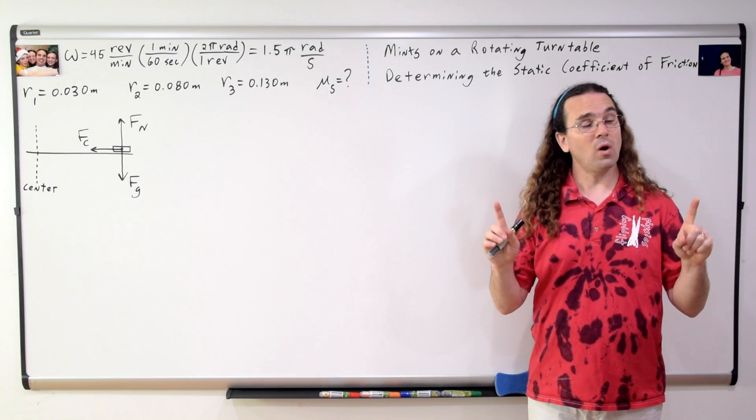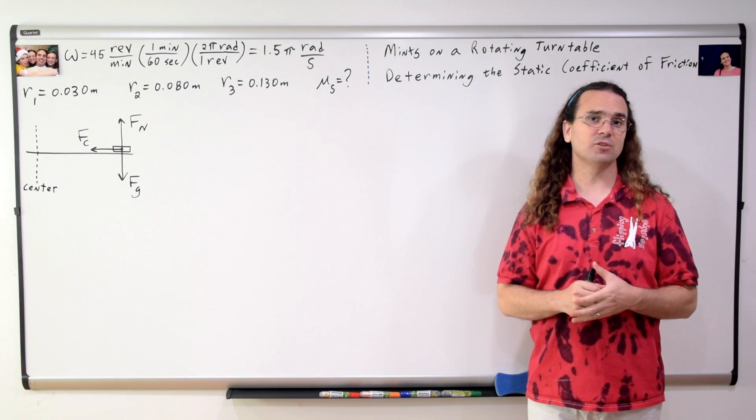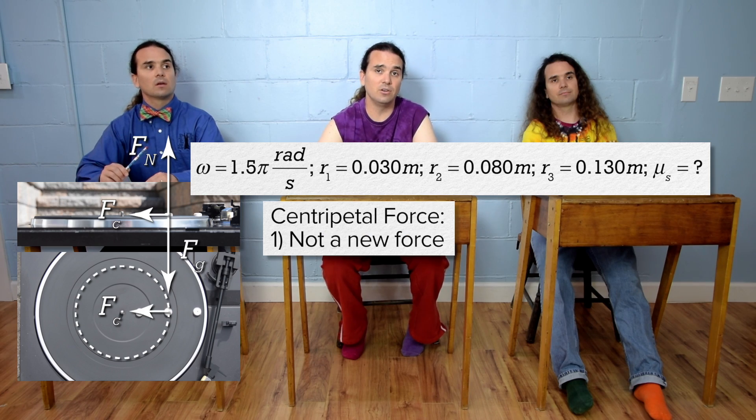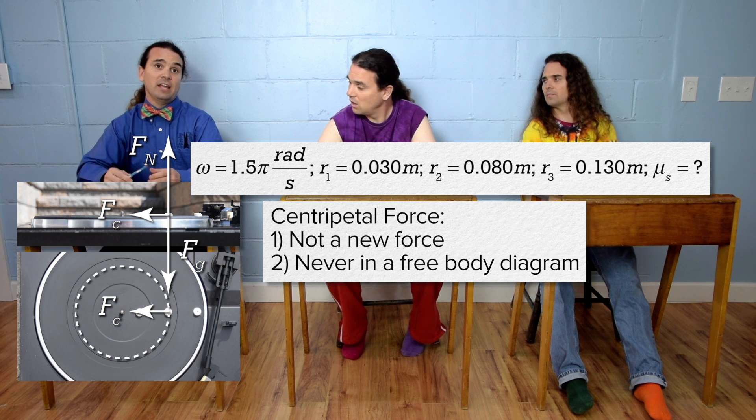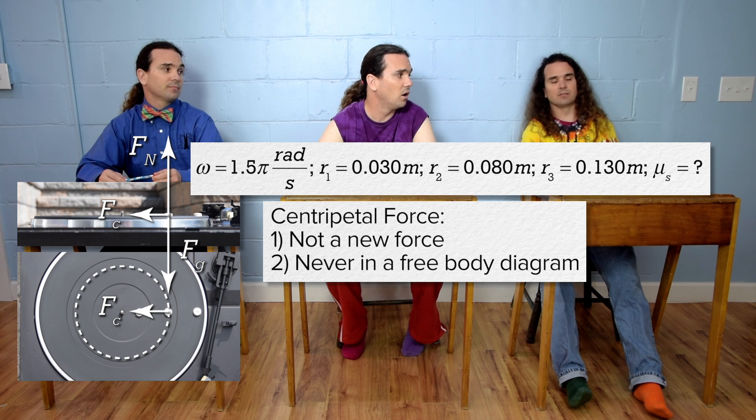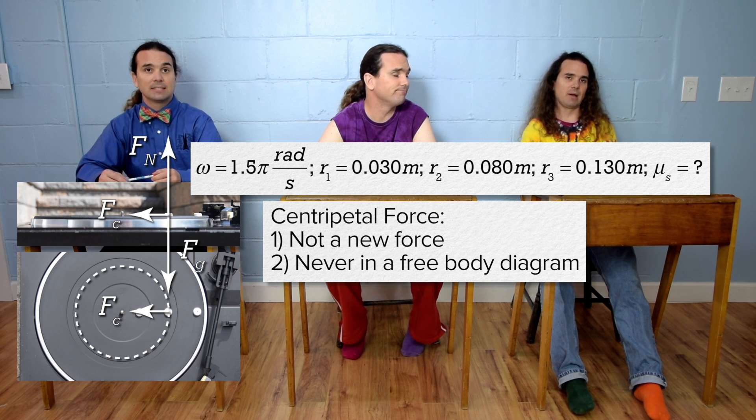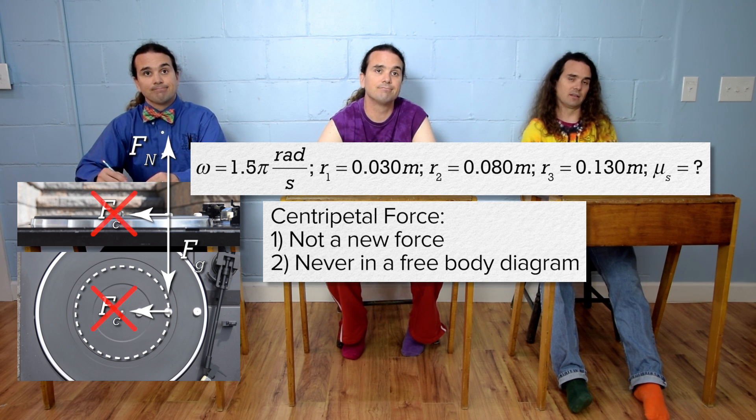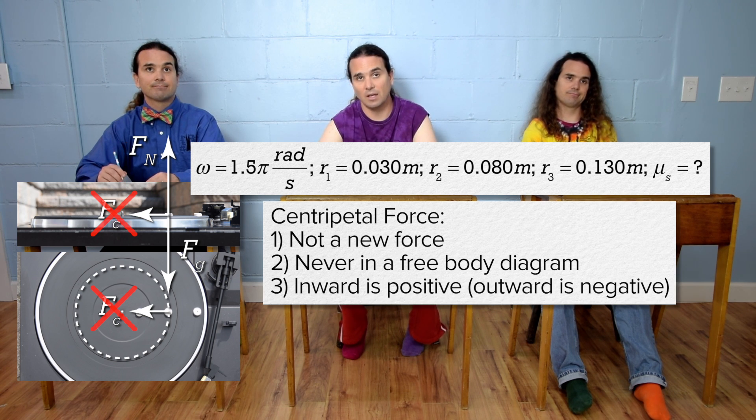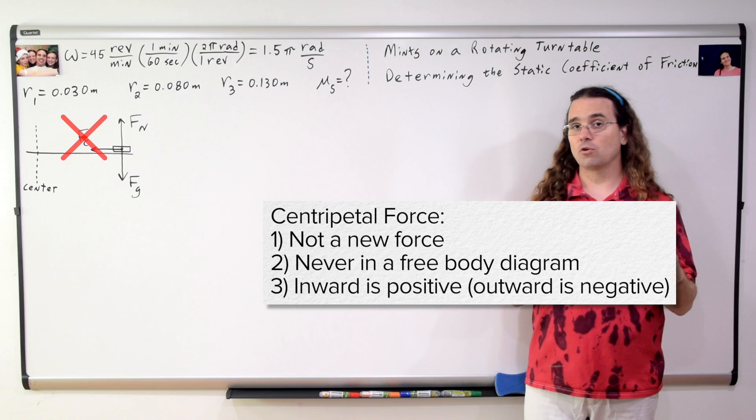Class, what are the three things I asked you to remember about the centripetal force? It's not a new force. It's never in a free body diagram. Yeah, so the centripetal force is never in a free body diagram, so that's not the inward force there. And the in direction is positive, and the out direction is negative. Correct.